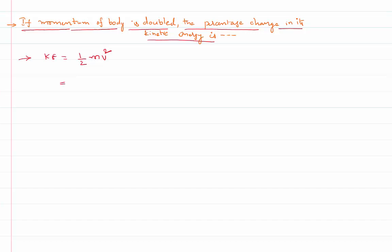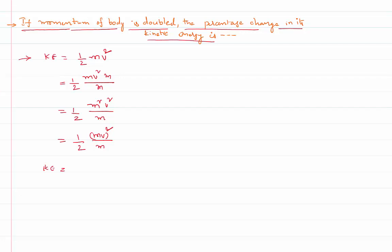We need to express kinetic energy in terms of momentum. I will multiply and divide the equation by mass. This gives half m squared v squared in the numerator divided by m. Now, mv is nothing but momentum, so m squared v squared is momentum squared. Therefore, the relation is: kinetic energy equals p squared by 2m.